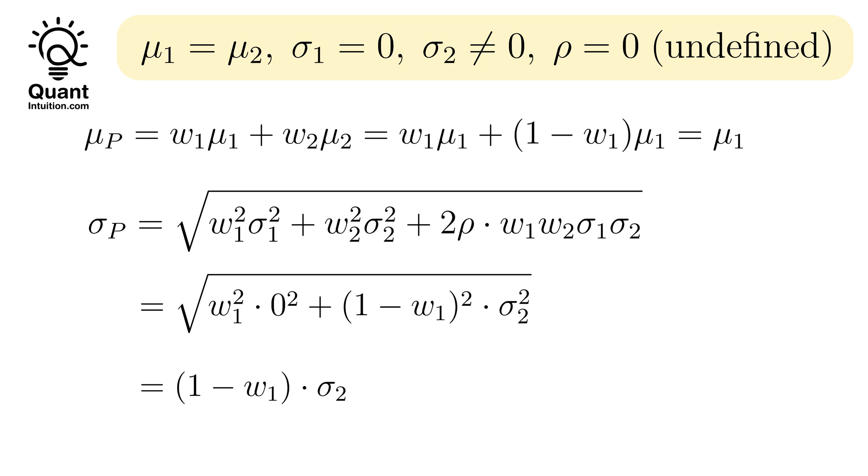If we move W1 between 0 and 1, the mean stays constant, and the standard deviation moves between 0, which is sigma1, and sigma2.